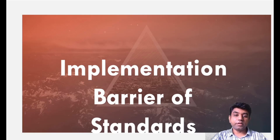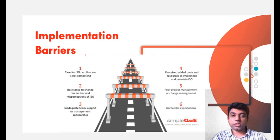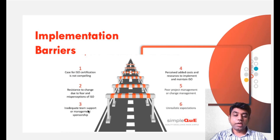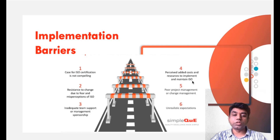Now coming to the implementation barriers of standards — if you want to implement any standard, what are the different hurdles? The first hurdle is that the case for ISO certification is not compelling — the company wants the certificate but is not following all the rules or is not in a stage to comply. The second is resistance to change due to fear and misperception of ISO — they are not ready to change or fear they cannot cope with the requirements. The third is inadequate team support or management sponsorship — they are not getting adequate funds to get the ISO certificate.